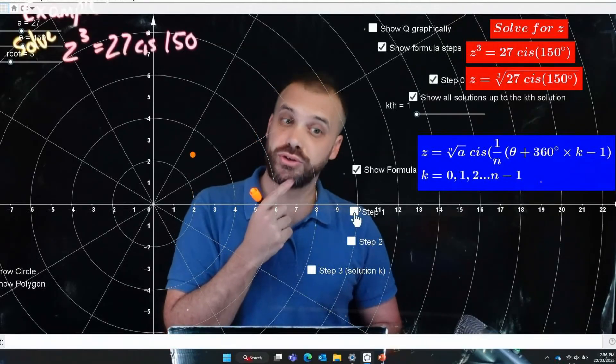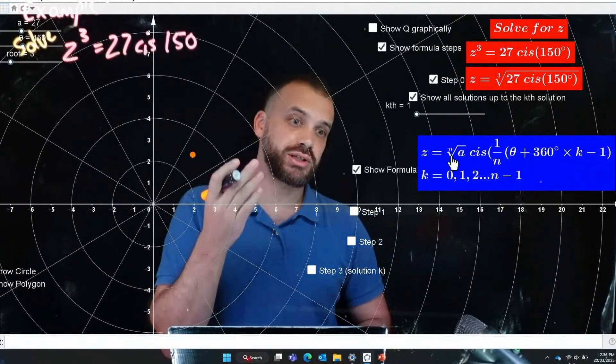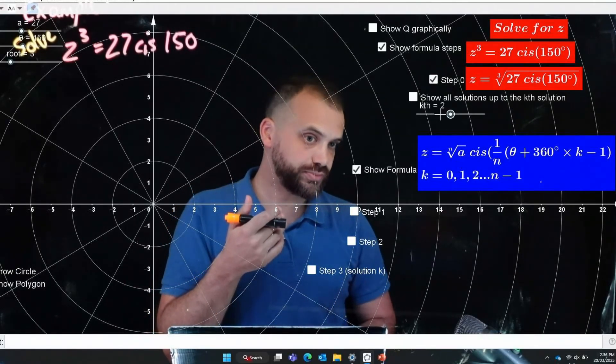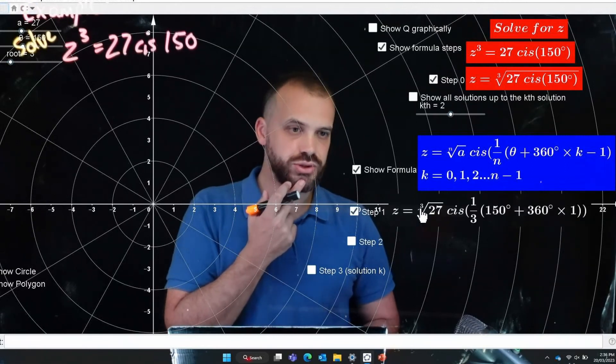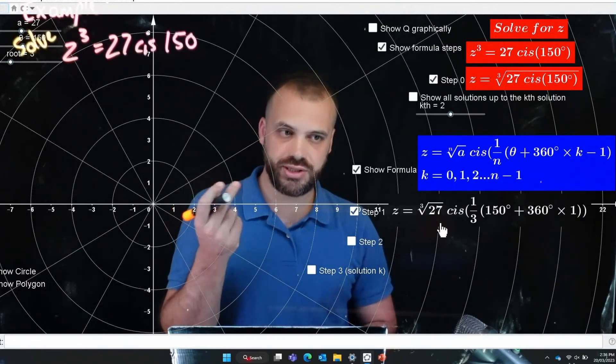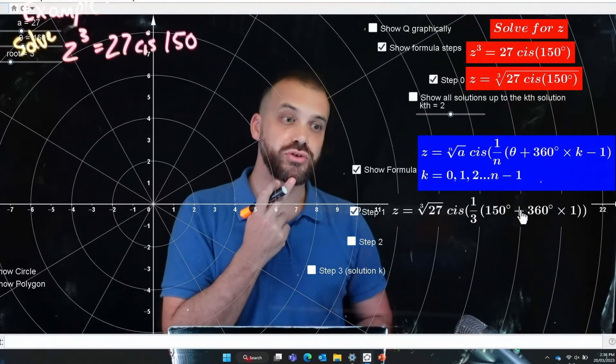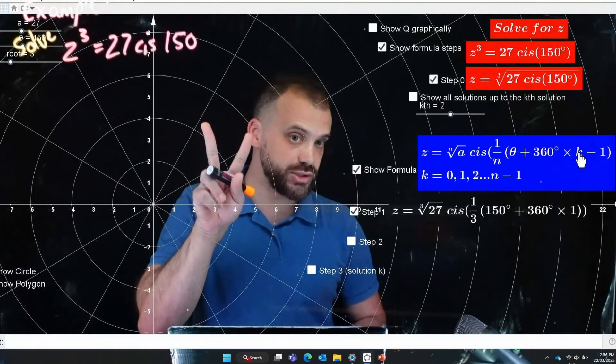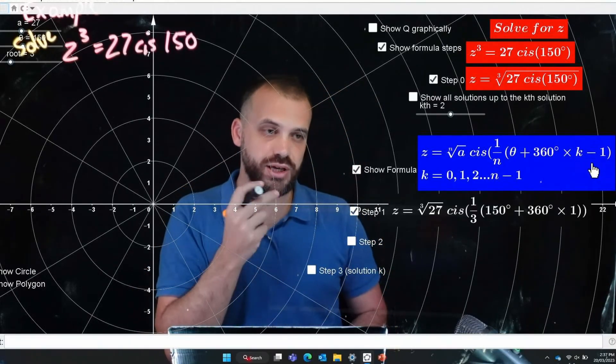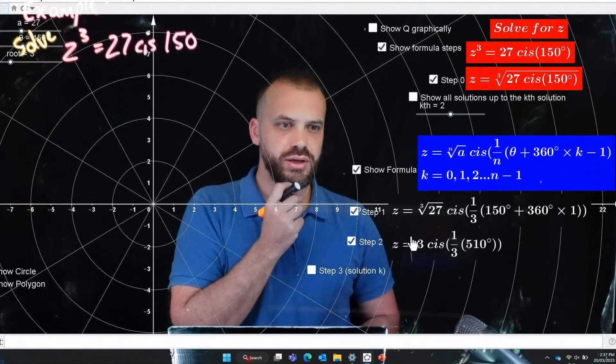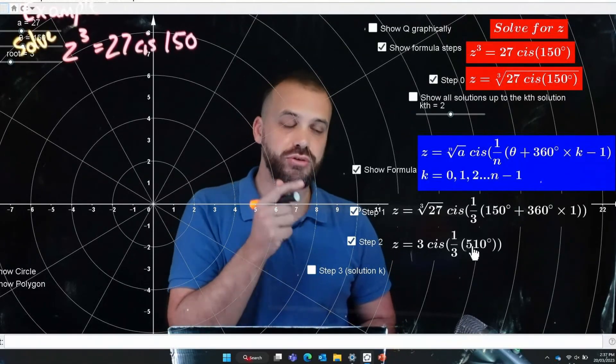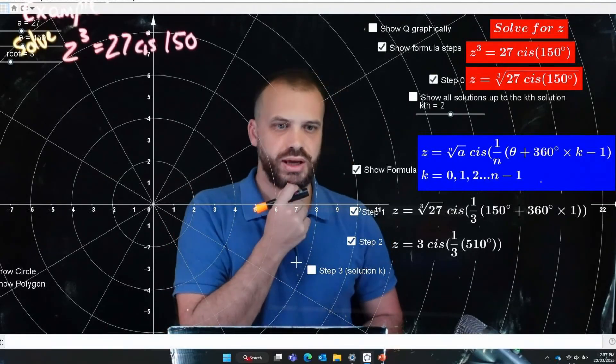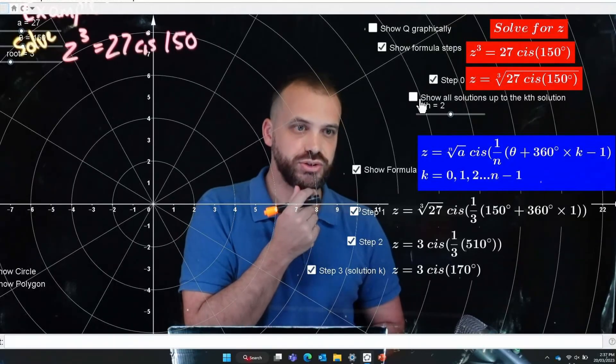Okay what about if you're not thinking like that, what about if you're trying to engage with this formula? All right let's look at the second solution. Step one this time it's going to be the cube root of 27 still the same, cis 1 third 150 degrees plus 360 times 1, because we're trying to find the second solution k minus 1 is our formula here okay. 3 cis 1 third of 510 which is 150 plus 360 times 1, and that is going to be our second solution.